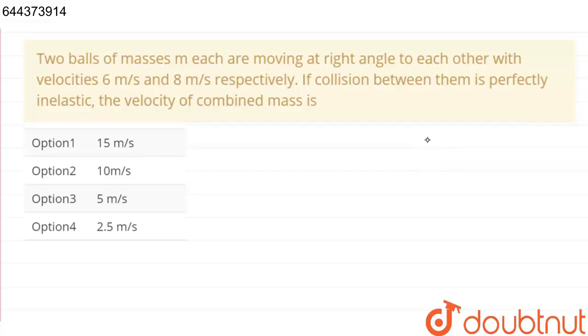In this question it is given: two balls of masses m each are moving at right angles to each other with velocities 6 meter per second and 8 meter per second respectively.